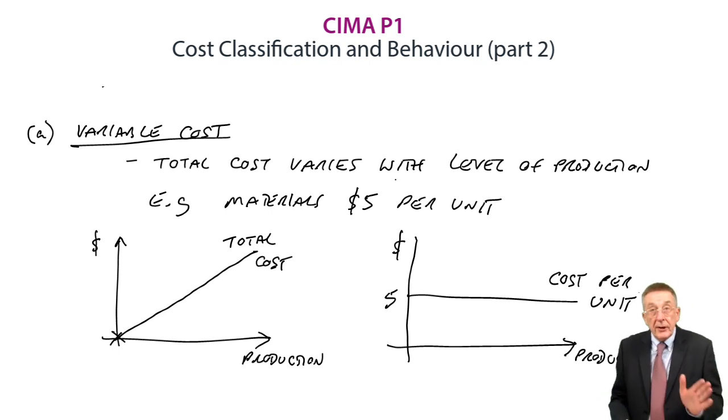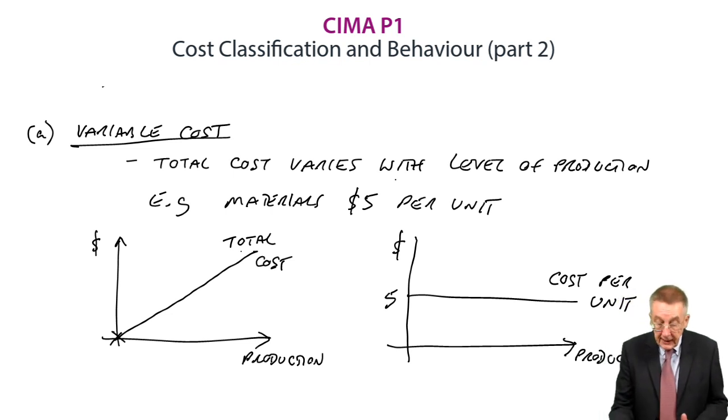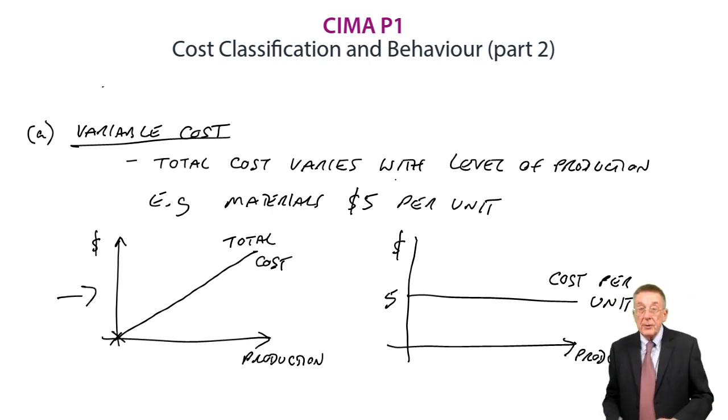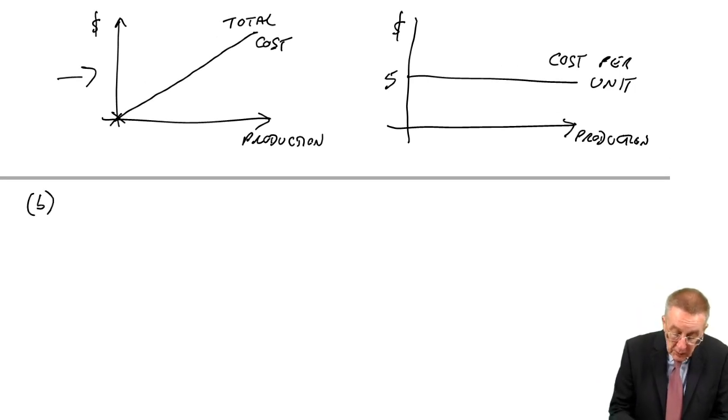As a result, the total cost increases with the production. So that's fine, things like materials, it's a variable cost. The second category is a fixed cost.